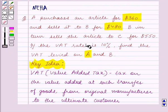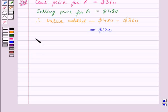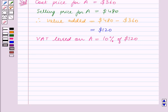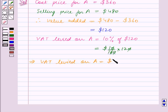It is given that the VAT rate is 10%. So VAT levied on A equals 10% of the value added, which is $120. This equals 10/100 times $120. The zeroes get cancelled. So this implies VAT levied on A equals $12.